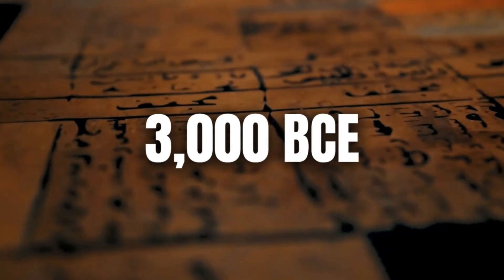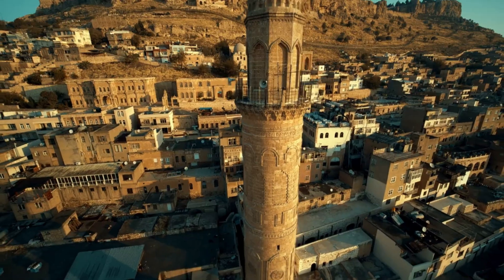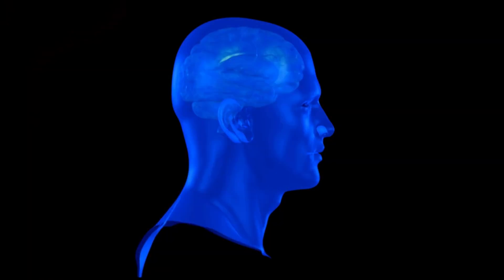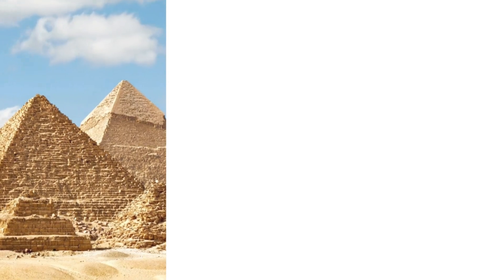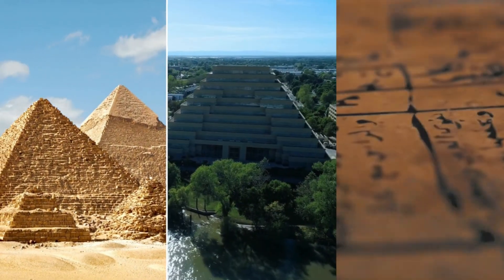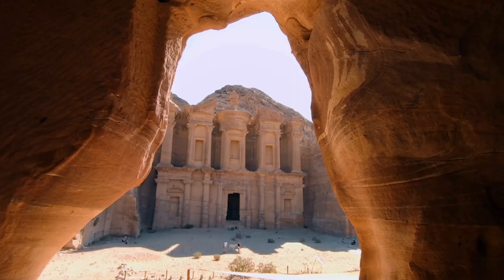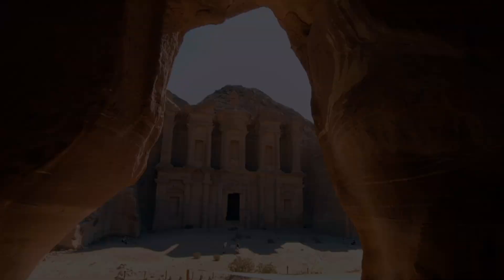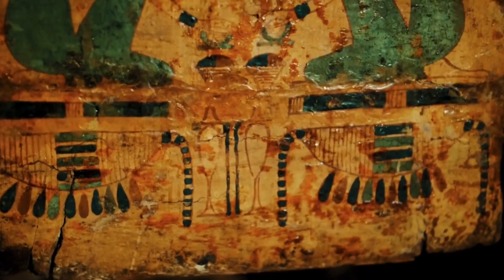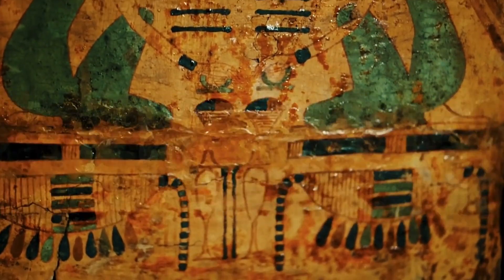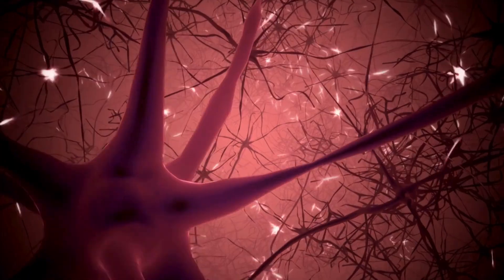By 3000 BCE, in places like Mesopotamia and the Nile Valley, human brains were building pyramids, ziggurats, and written language. But these weren't just architectural or linguistic feats; they were signs of something deeper. The brain had begun organizing time itself.